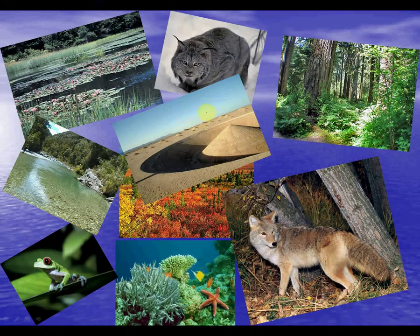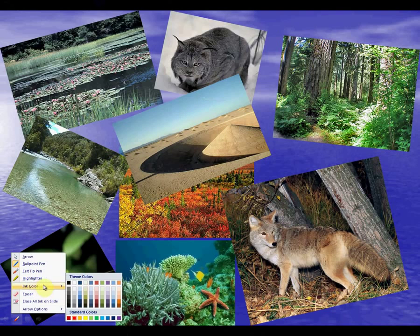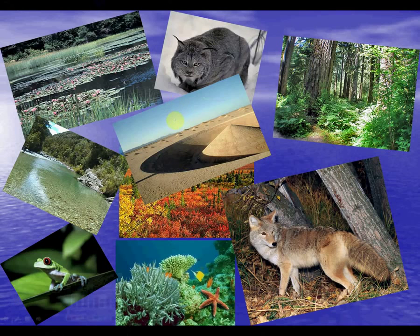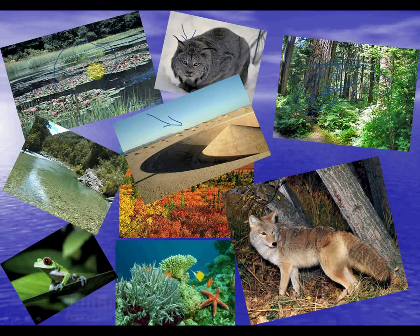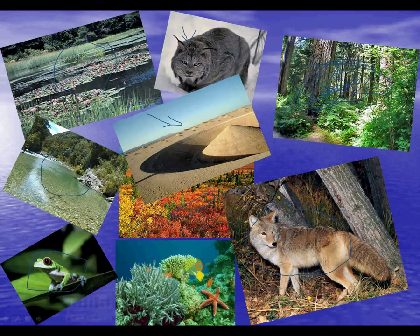Looking at the visual overview, we have the desert, the wetlands, the rainforest, streams, rivers, ocean, a coyote in the deciduous forest or grasslands, the rainforest, the tundra, and the marine biome all represented.